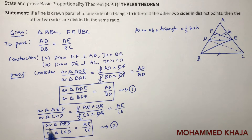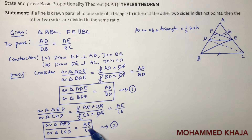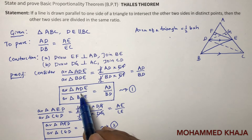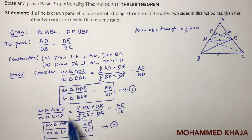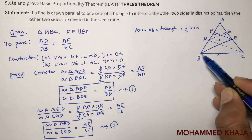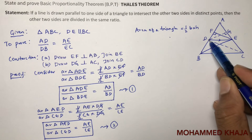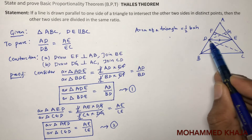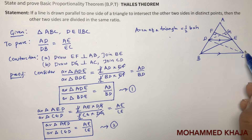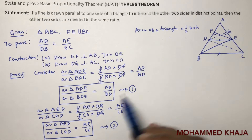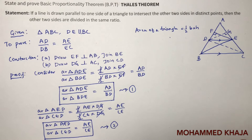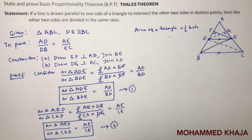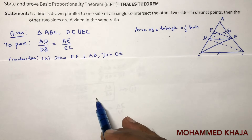Now, if area of △ADE / area of △BDE equals area of △ADE / area of △CED, then the theorem is proved since AD/DB = AE/EC. The numerators in both ratios are the same (△ADE). We need to show the denominators are equal — that is, area of △BDE equals area of △CED.